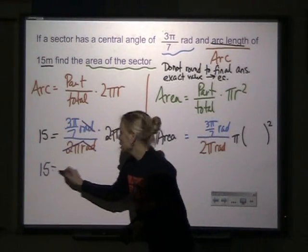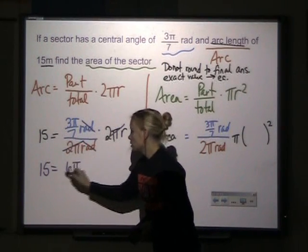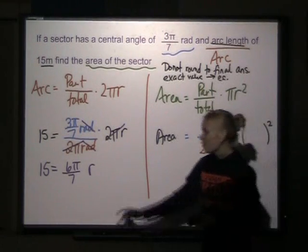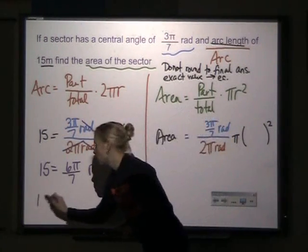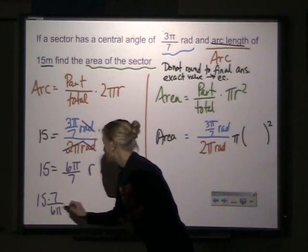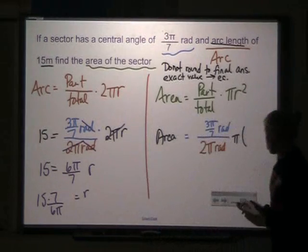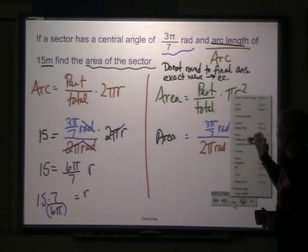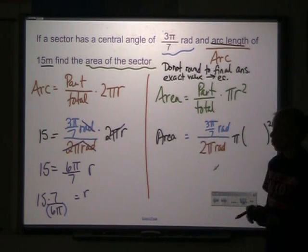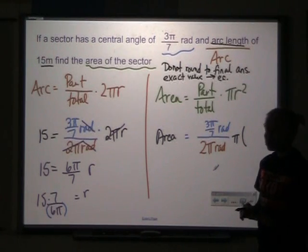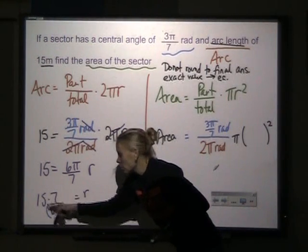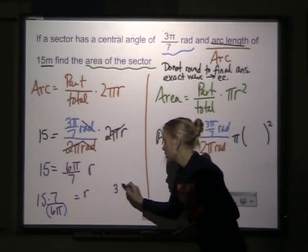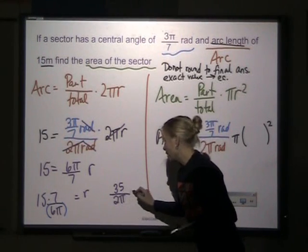So right now I have 15 equals 3 times 2 divided by 7r. A lot of people like to divide, but it's so much easier to multiply by the reciprocal, especially because you have to make sure you know that all of this is being divided by 6π. And a lot of people also make a mistake in that respect and get the wrong answer. So if I was going to find the exact answer, 6 goes into 15, 3 for both of them. So I'm going to have 5 times 7 over 2π. That's my radius.